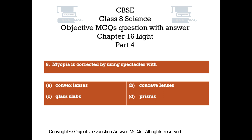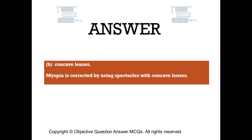Question number 8. Myopia is corrected by using spectacles with: Option A convex lenses. Option B concave lenses. Option C glass slabs. Option D prisms. The right answer is option B: concave lenses. Myopia is corrected by using spectacles with concave lenses.